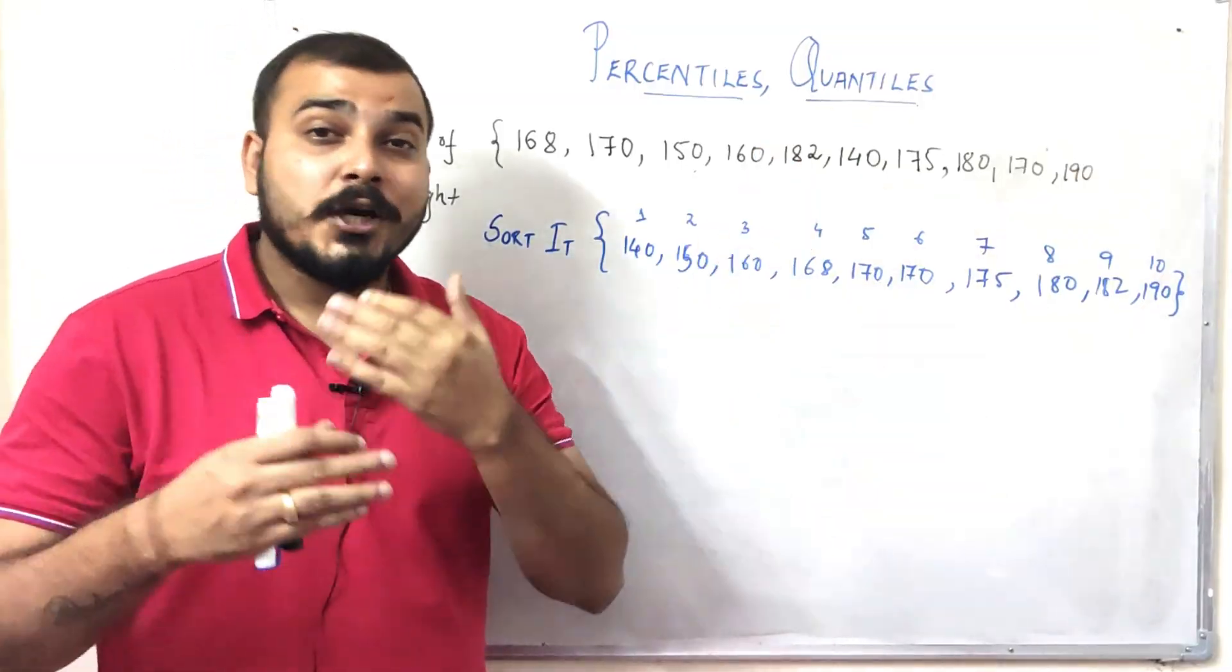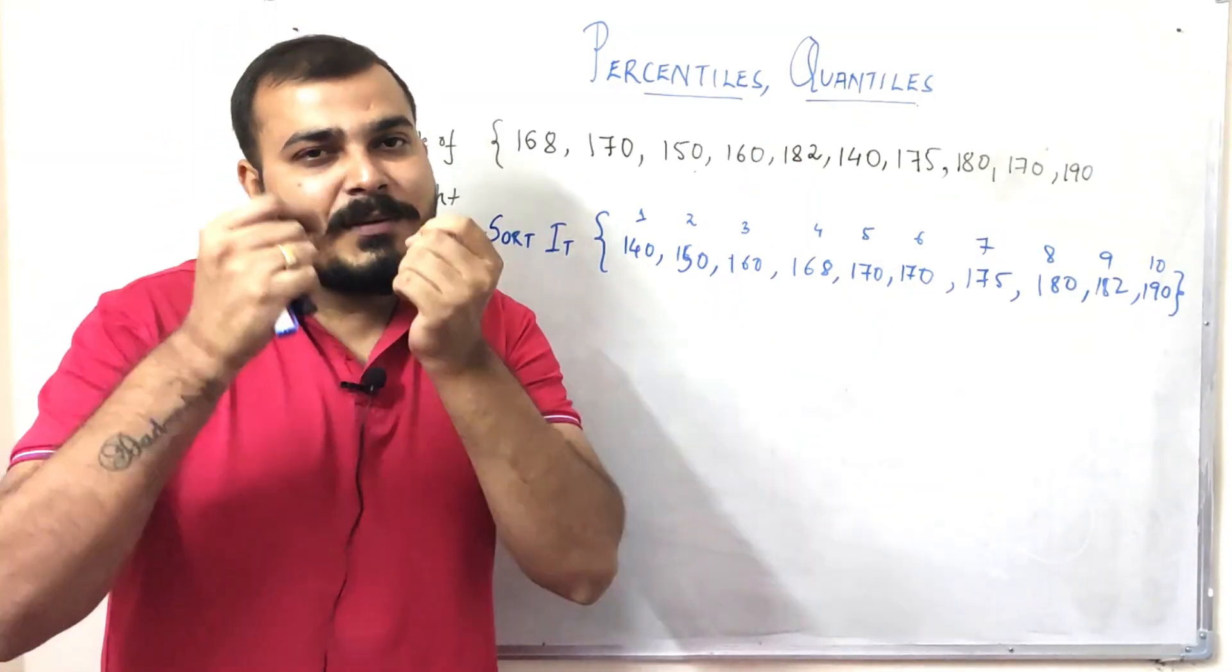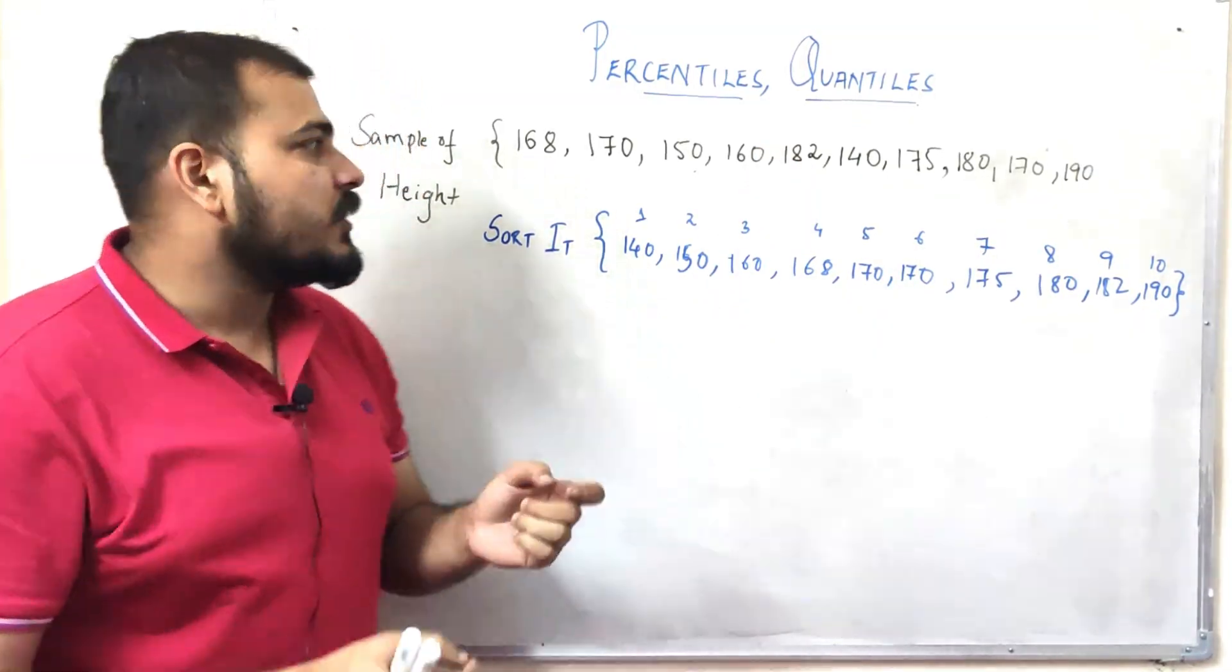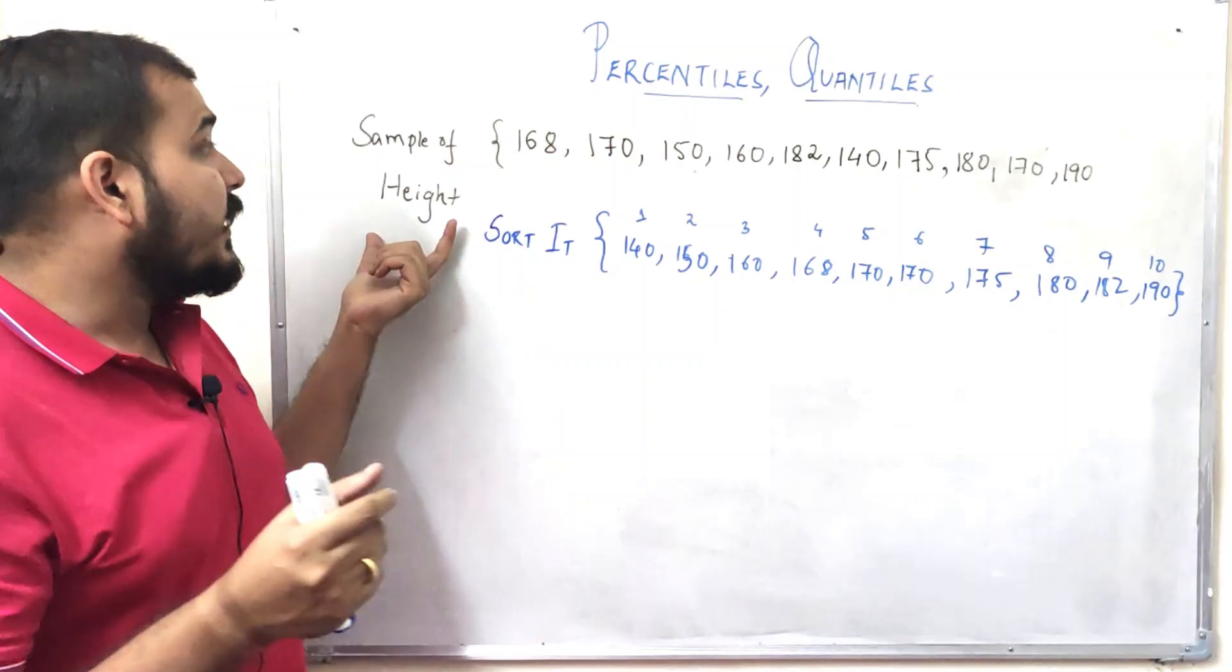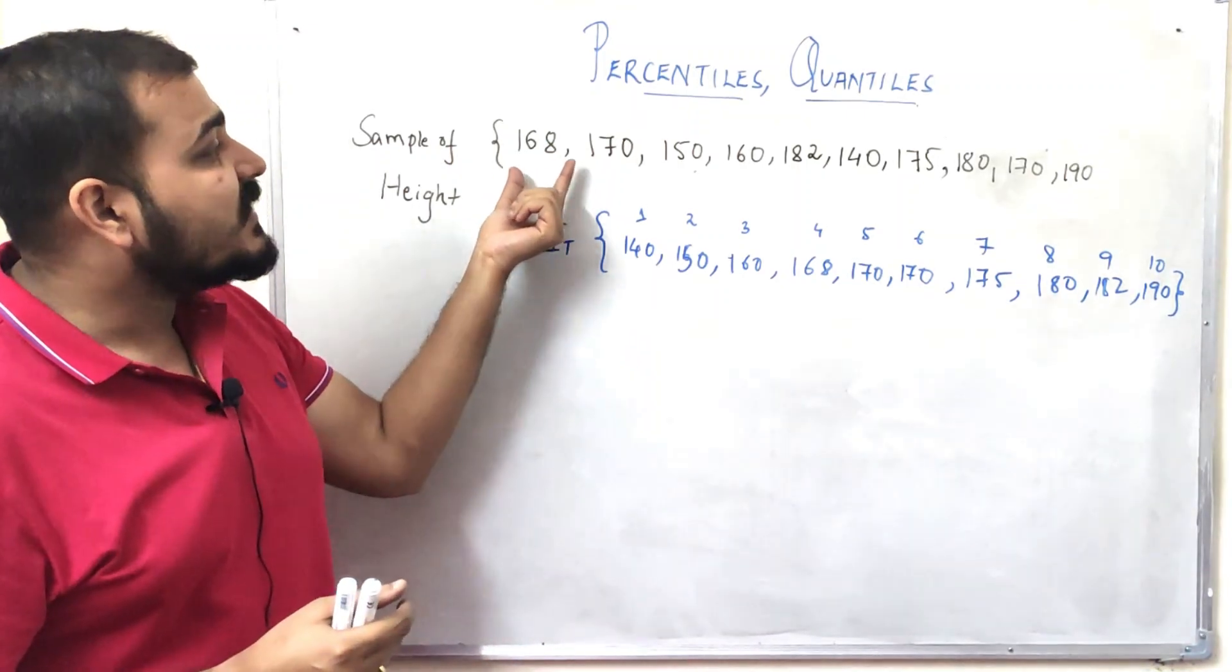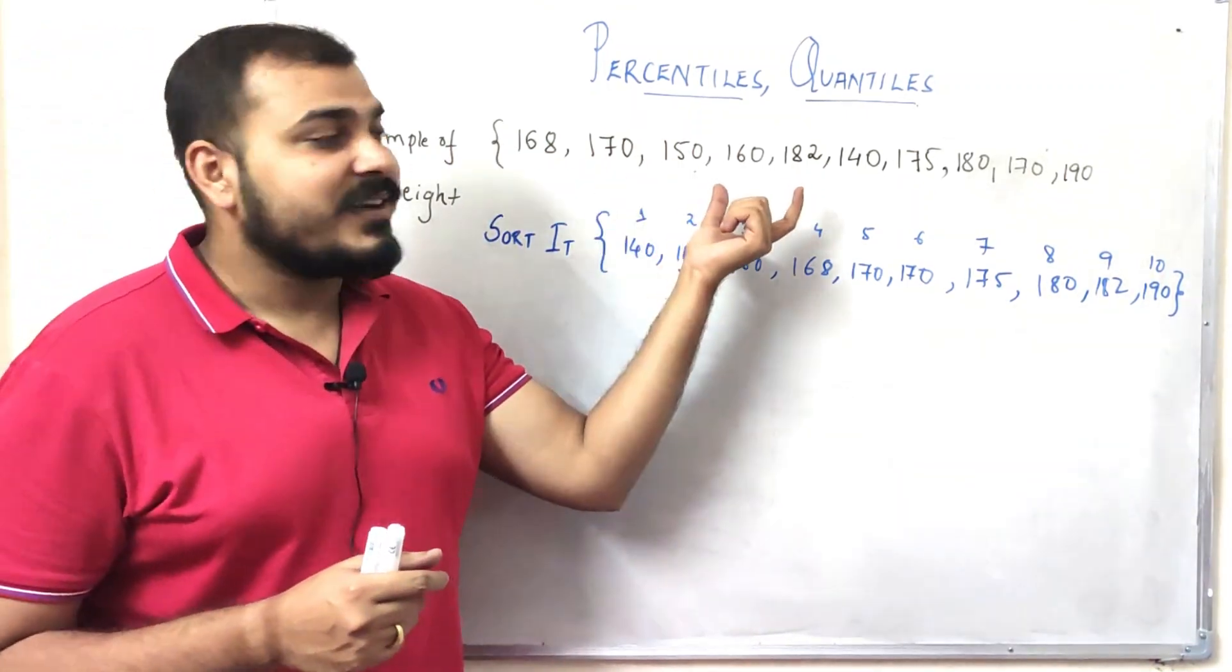Let me take an example. Suppose you have a feature - height - and you have values like 168, 170, and these are all measured in centimeters. Here you basically have 10 different values.